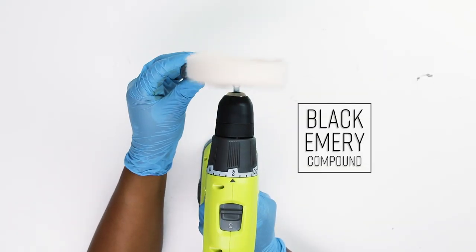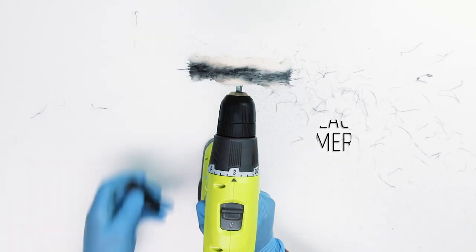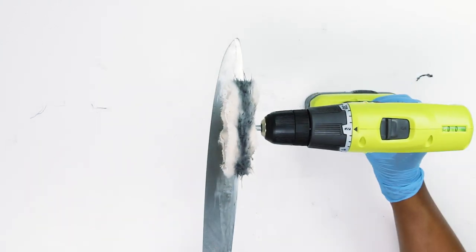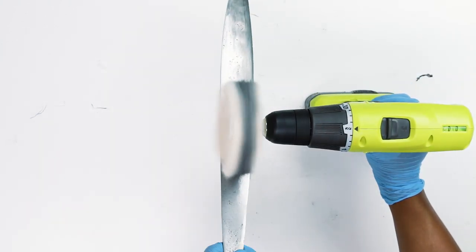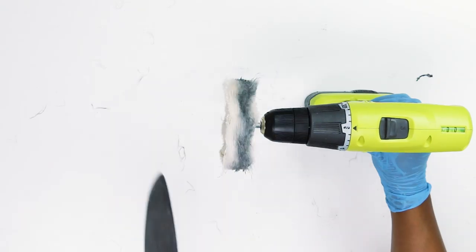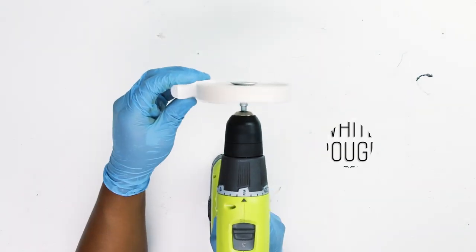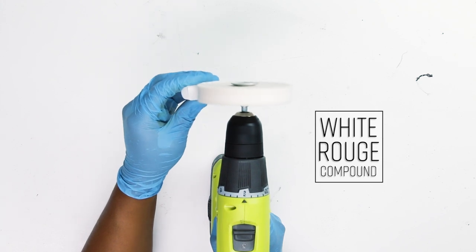We used the black emery compound to remove the scratches and the pits on the blade. For a final finish we used the white rouge compound.